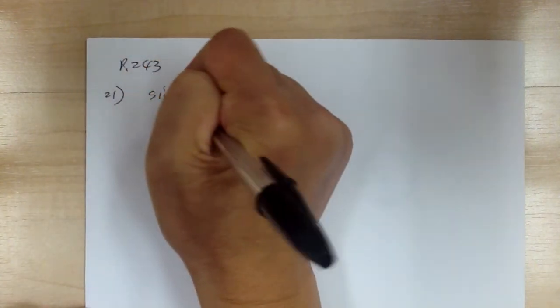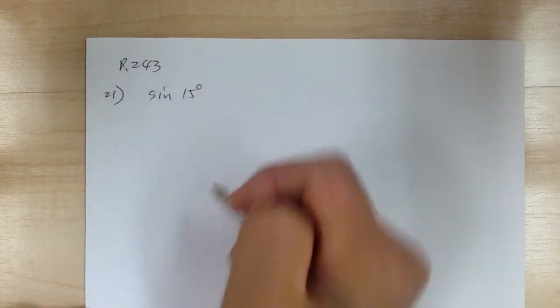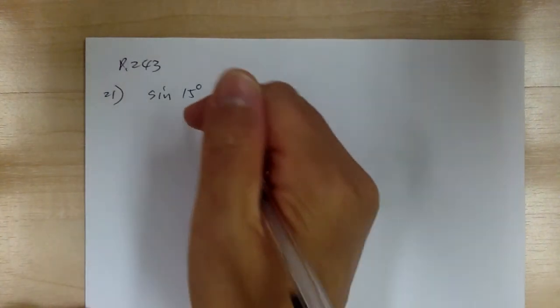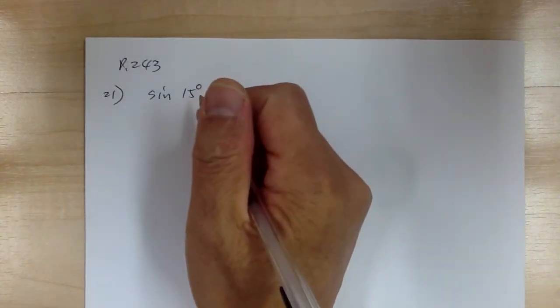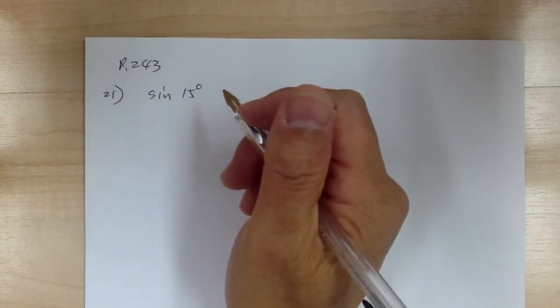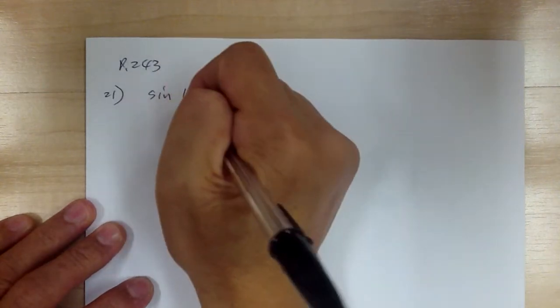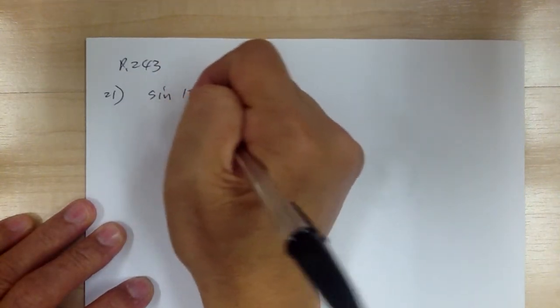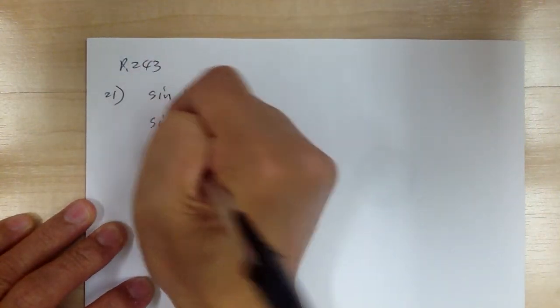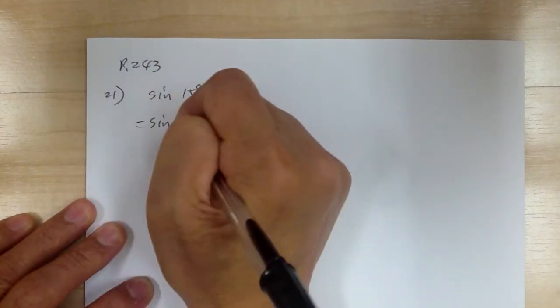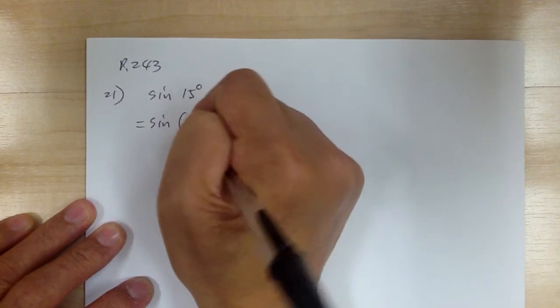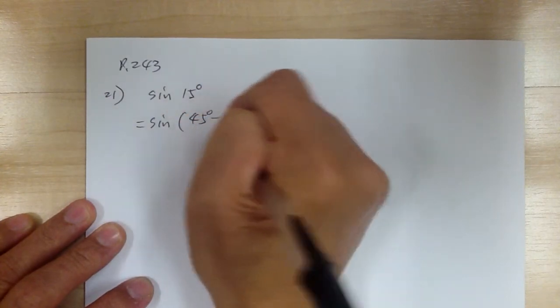Let's go to page 243 and start with number 21. Number 21, you have sine of 15 degrees, and you want to use the identity to find the exact value. First you need to find the angle that will give you the 15. This will equal to sine of 45 minus 30.